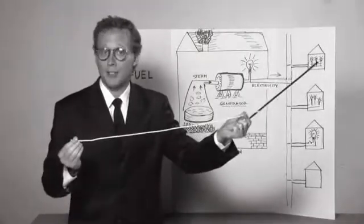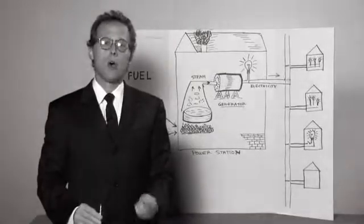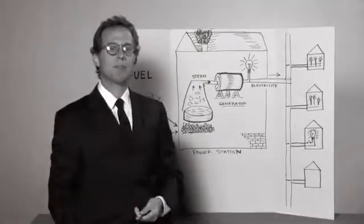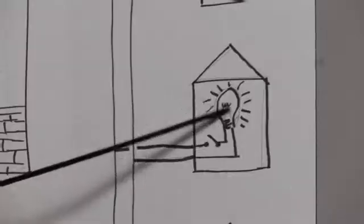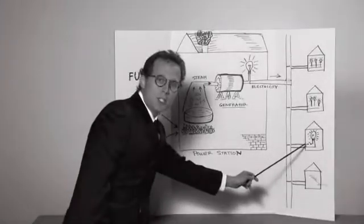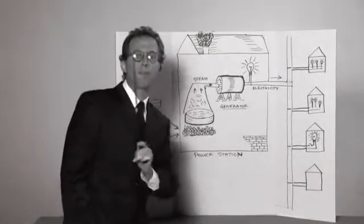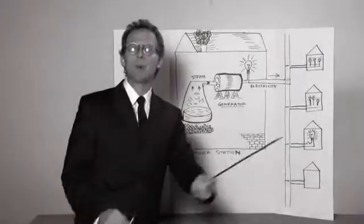Of course, if you think about it, there will be times when you won't want to have the lights on. For example, when you go to sleep at night. Well, for this purpose, scientists have created an invention we call the switch. Now, you can put a switch just before you connect the wire to the light bulb and you can turn off the switch any time you want.